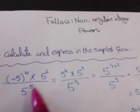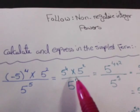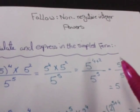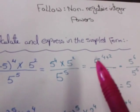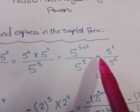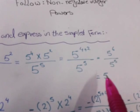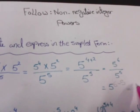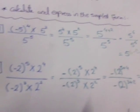Here I have a negative sign and an even power, so the even power makes the negative sign positive. So it becomes five power four times five power two over five power five. I add the powers in the numerator: four plus two equals six, over five power five. Then I subtract: six minus five equals one, so five power one equals five.